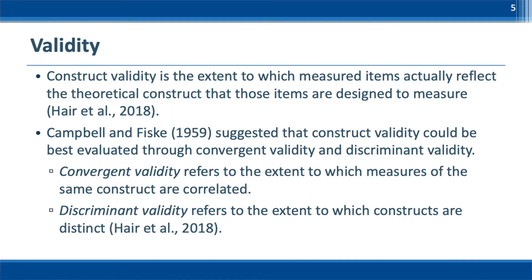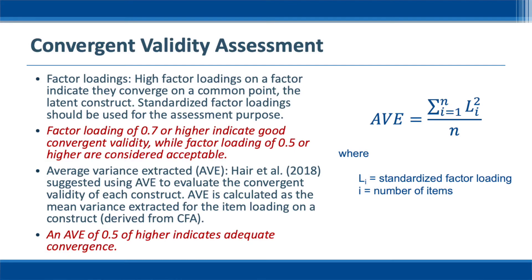First, let's examine the convergent validity. Convergent validity refers to the extent to which measures of the same construct are correlated. In other words, it provides empirical evidence that items that are indicators of a specific construct should converge or share a high proportion of variance in common. Typically, we can use standardized factor loadings to evaluate convergent validity. Factor loadings of 0.7 or higher indicate good convergent validity, and factor loadings of 0.5 or higher indicate acceptable convergent validity. The second method is to use AVE to evaluate the convergent validity.